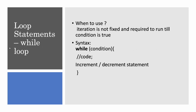Next is the while loop. You use while when you know the condition to check but the iteration count is not fixed — you want to run it as long as a condition is true. The syntax is: while (condition), do the following code, and include an increment or decrement statement.